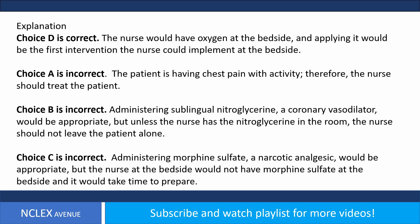Answer. Choice D is correct. The nurse would have oxygen at the bedside, and applying it would be the first intervention the nurse could implement at the bedside. Choice A is incorrect. The patient is having chest pain with activity; therefore, the nurse should treat the patient. Choice B is incorrect. Administering sublingual nitroglycerin, a coronary vasodilator, would be appropriate, but unless the nurse has the nitroglycerin in the room, the nurse should not leave the patient alone.